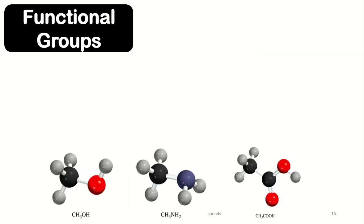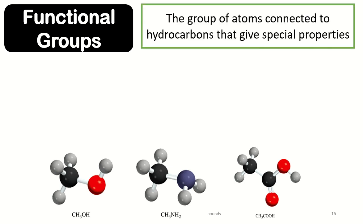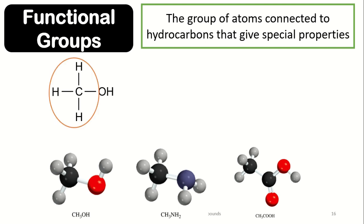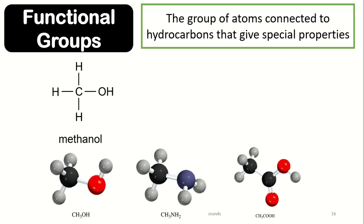Now let us proceed to the idea of functional groups. Functional groups refer to the group of atoms connected to hydrocarbons that give special properties to specific compounds. For example, if we attach an OH group to the methyl group, the compound becomes methanol — the OH is the functional group. Attaching an NH2 group instead gives us methylamine. And attaching a carbon with a double-bonded oxygen plus an additional OH gives us acetic acid. These are different compounds but made from the same number of carbon atoms because of their functional groups.